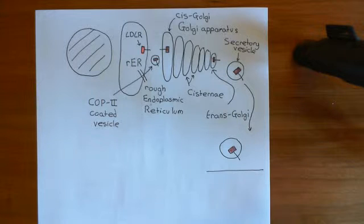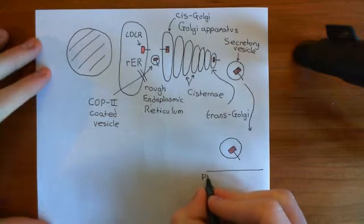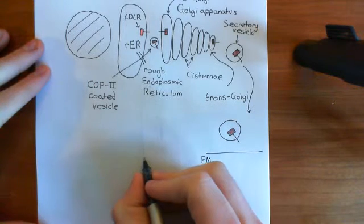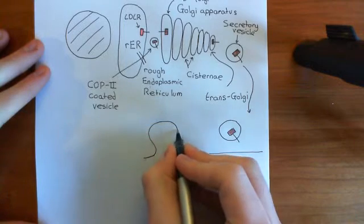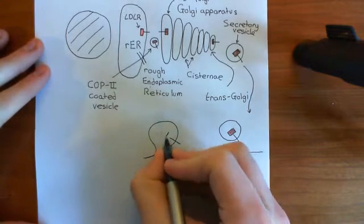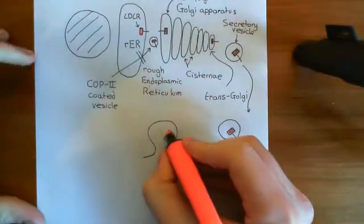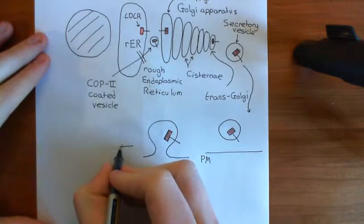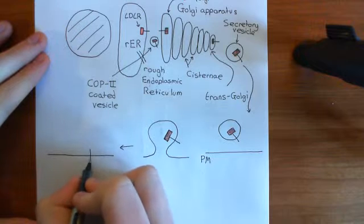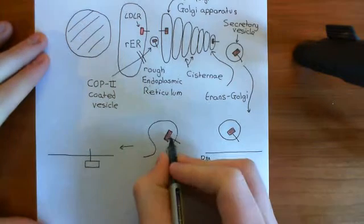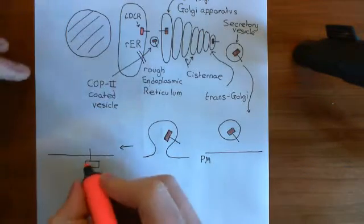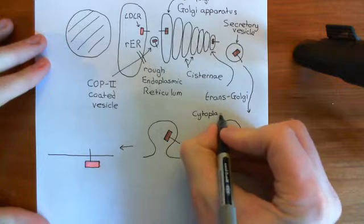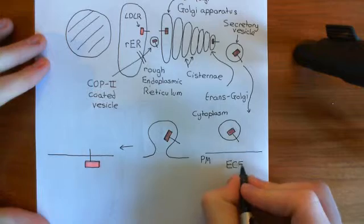I want to do this so that I can convince you that the LDL receptor is going to end up with that LDL receptor type A repeat domain on the correct side. The secretory vesicle is going to come up and fuse with the plasma membrane. Here is our LDL receptor with its LDL receptor type A repeat domain facing into the lumen of the secretory vesicle. When this all evens out, we're going to end up with our LDL receptor on the plasma membrane with the LDL receptor type A repeat domain facing out into the extracellular fluid. This is the cytoplasmic side of the plasma membrane, and this is the extracellular fluid — the ECF. That's how we get our LDL receptors to the plasma membrane.